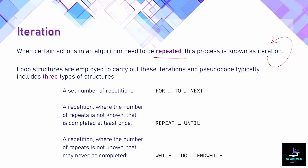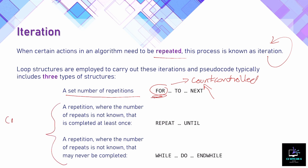The first way is when we know how many times we need to repeat an instruction — a set number of repetitions. When we know an instruction has to repeat 10 or 20 times, we use what we call a for loop, or as the syllabus refers to it, a count controlled loop. Count controlled means we know how many times it needs to loop and we control that amount by setting a counter.